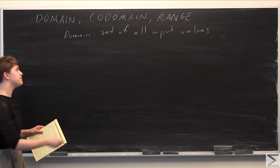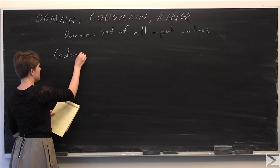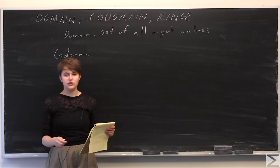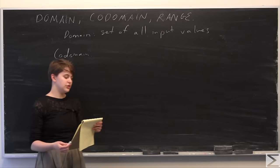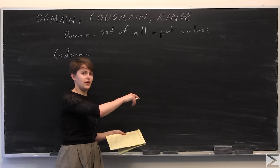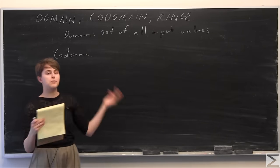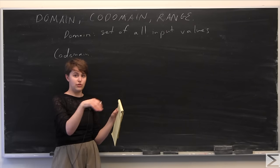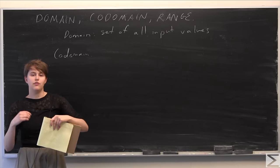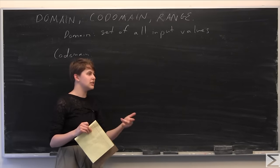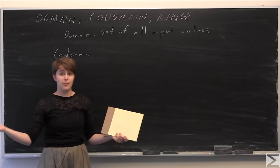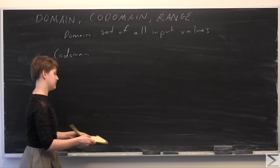The codomain is a set into which all the output values are constrained to fall. We make the codomain large enough so that we know all of the potential output values of the function will fall into it. The codomain might be bigger than the actual range, but we need to make it big enough to understand what our target space is for our function — so if we're plugging a real number in, we shouldn't get some kind of imaginary number popping out.